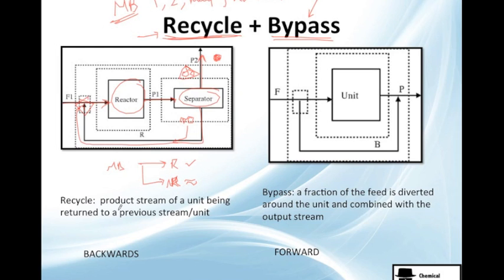Simply, recycle, this is the definition: it's a product stream of a unit being returned to a previous stream or unit. I mean, here is a stream here, but I could actually take it to the reactor. Whatever the process thinks is better. Maybe you need to heat here, so that's why we're going to give it in the feed before. Maybe the feed needs to be cold and this product is cold, so that's why they mix it before and then they throw it to the reactor.